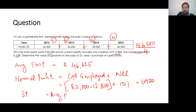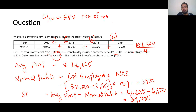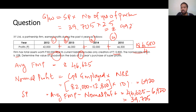Now, Super Profit = Average Future Maintainable Profit minus Normal Profit = 46,625 minus 6,920 = Rs. 39,705. Finally, Goodwill = Super Profit × Number of Years of Purchase = 39,705 × 2.5 = Rs. 99,262.50. That's how you calculate goodwill using the super profit method.